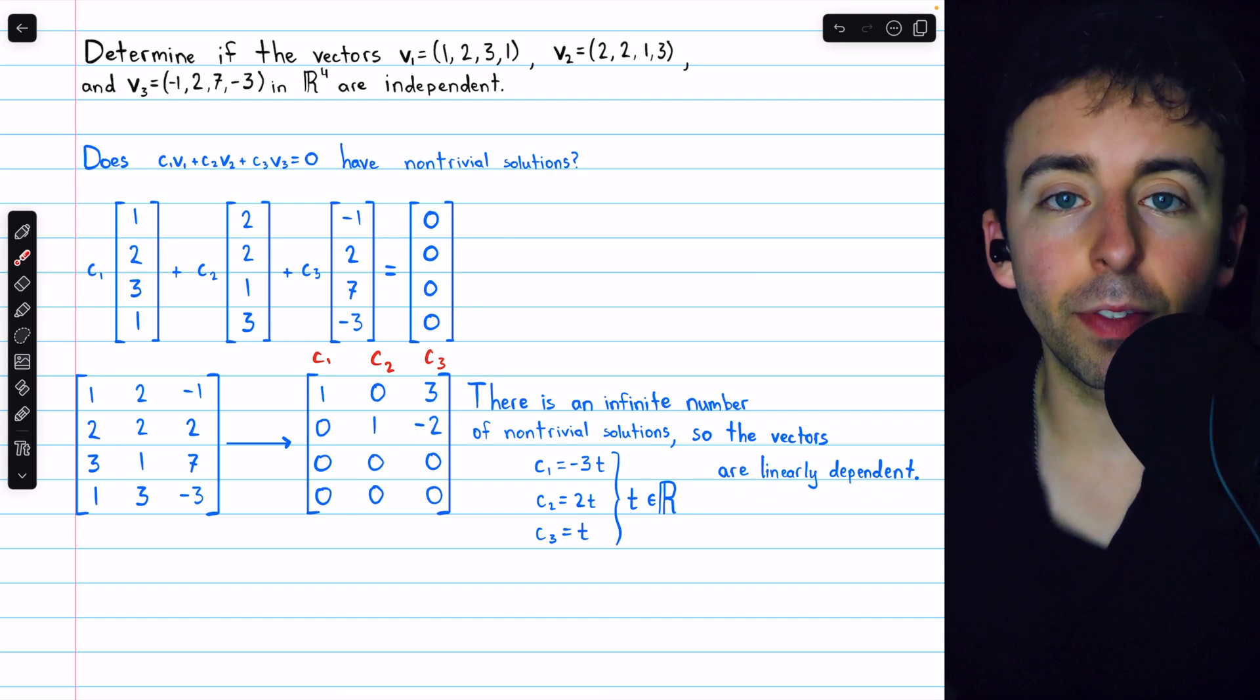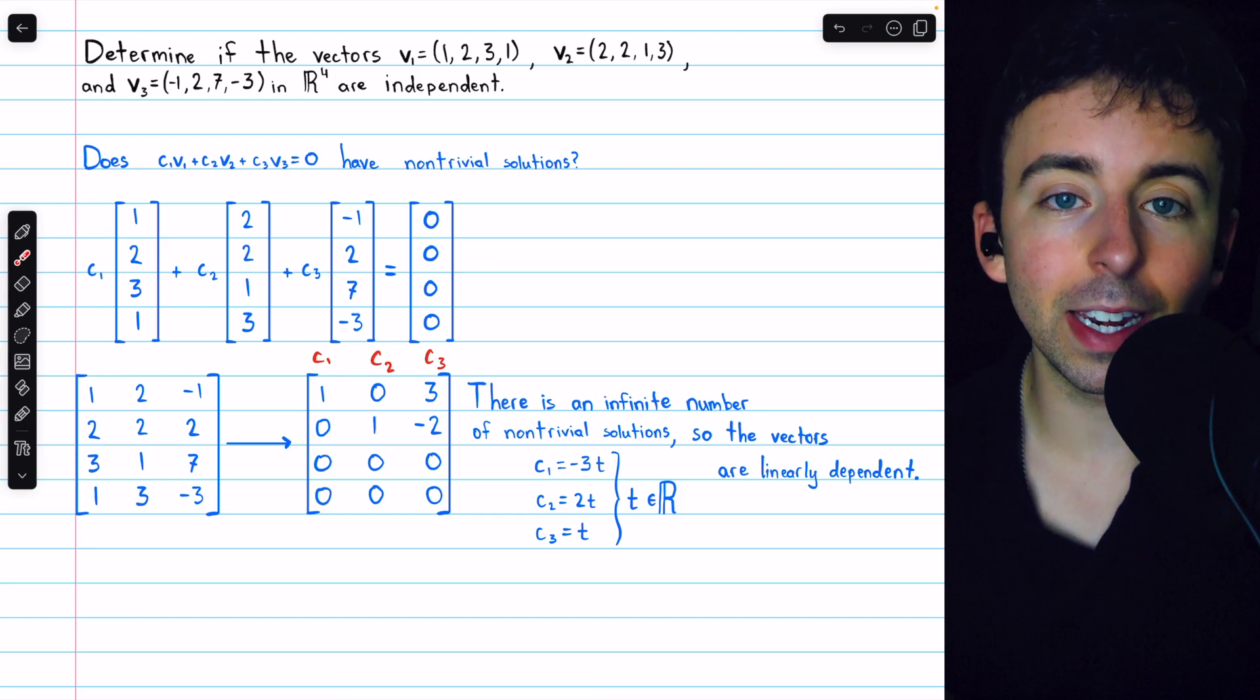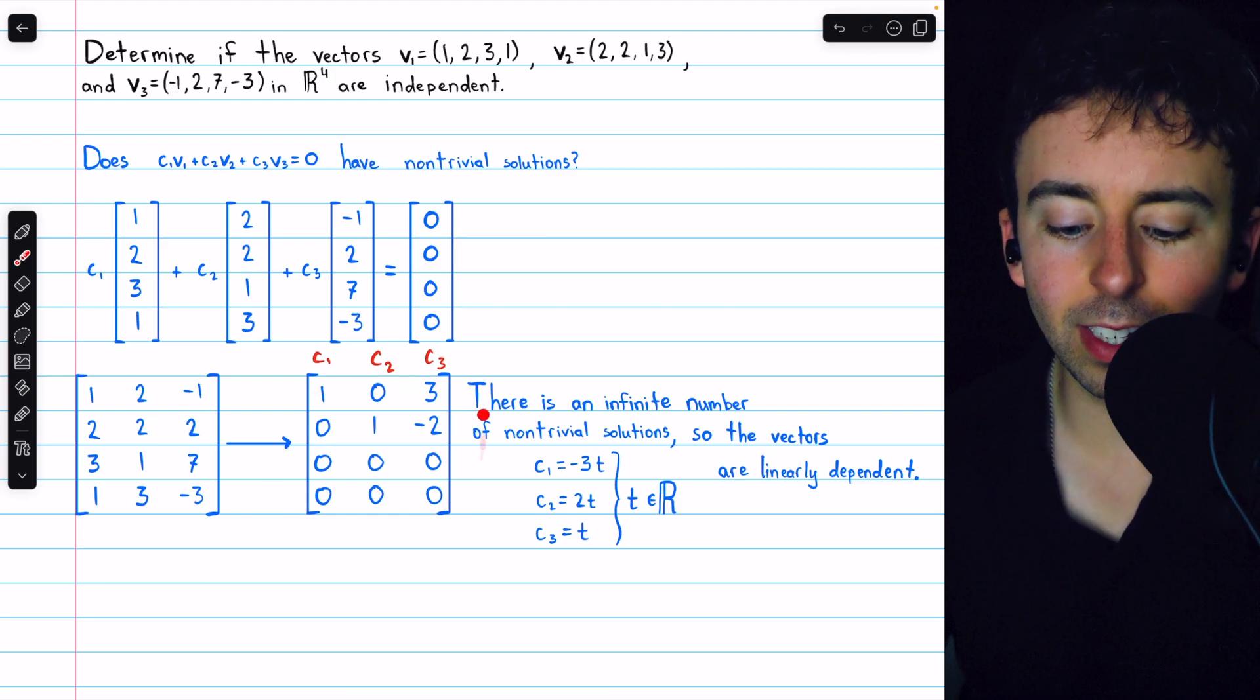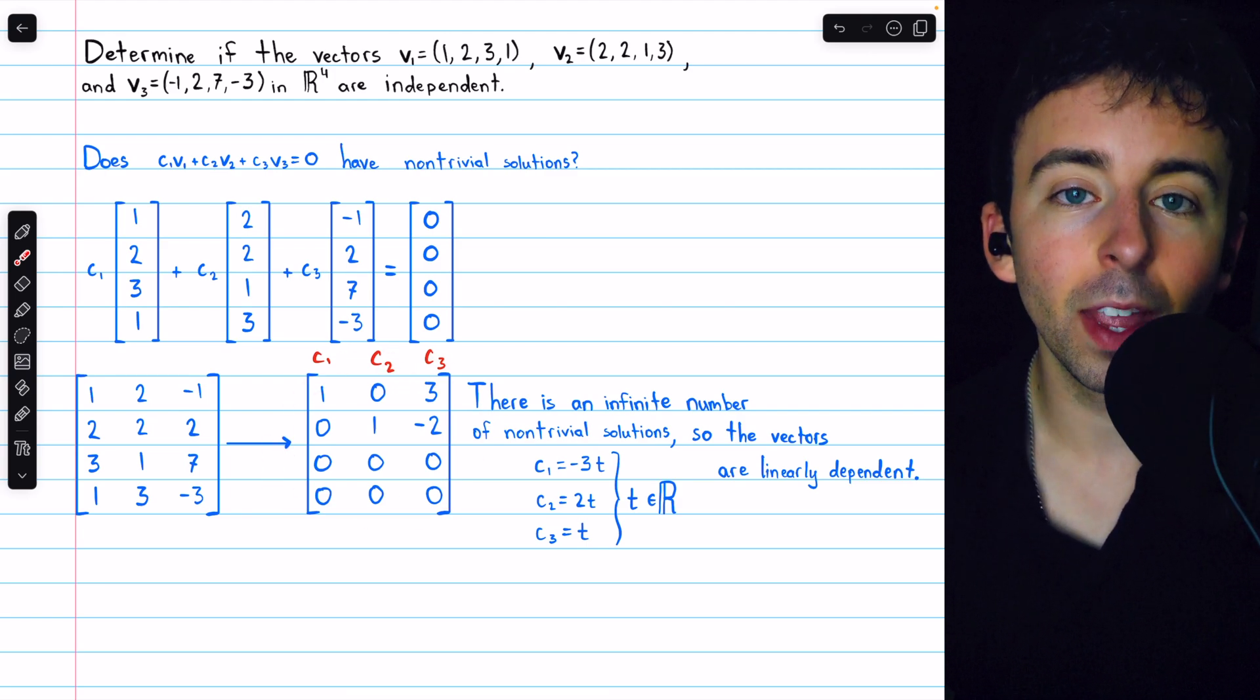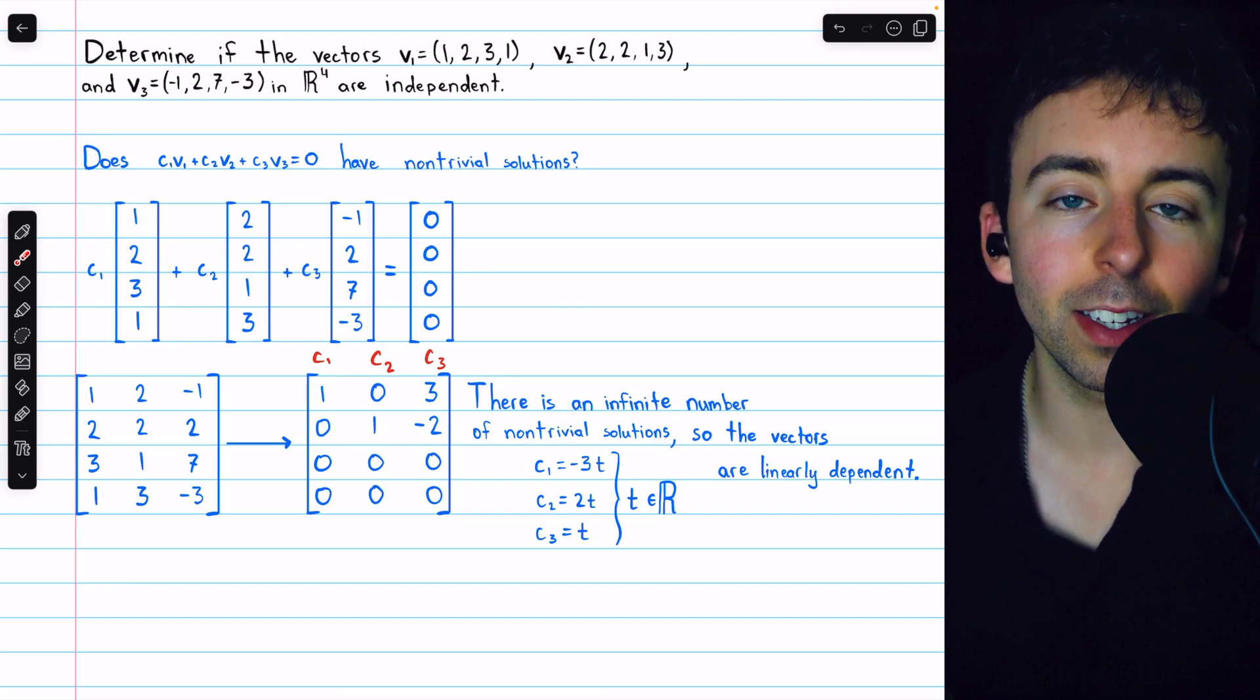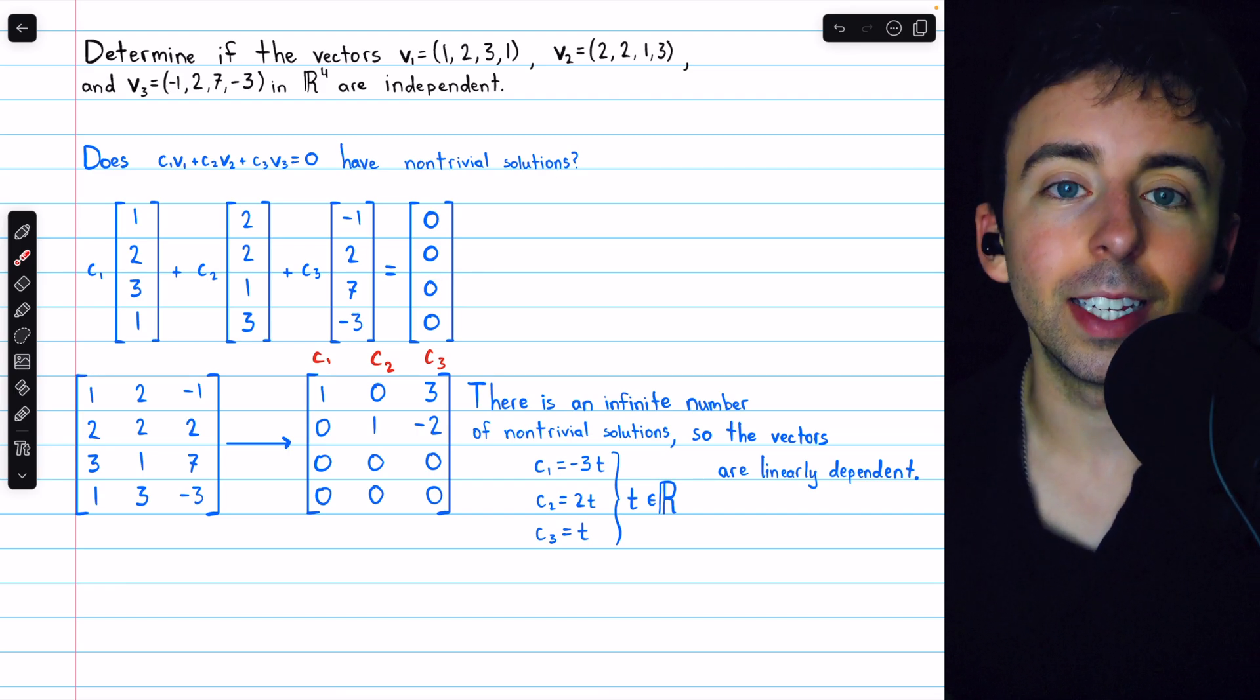That's how to determine if three vectors in R4 are linearly independent or not. Use them as the columns of a coefficient matrix, and then perform Gauss-Jordan elimination to see the nature of the solution set. If there was only the trivial solution, you would know that the vectors are linearly independent. Otherwise, they are linearly dependent.